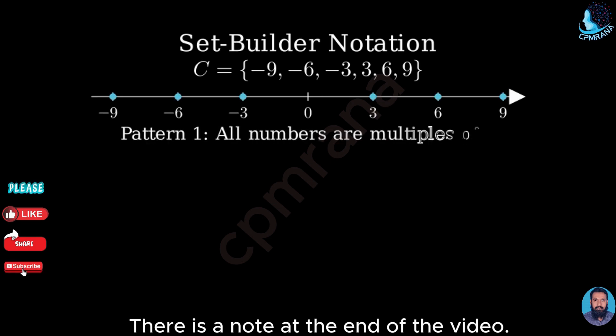First, all these numbers are multiples of 3. We can verify this by dividing each number by 3. Negative 9 divided by 3 is negative 3. Negative 6 divided by 3 is negative 2. Negative 3 divided by 3 is negative 1. 3 divided by 3 is 1. 6 divided by 3 is 2, and 9 divided by 3 is 3.